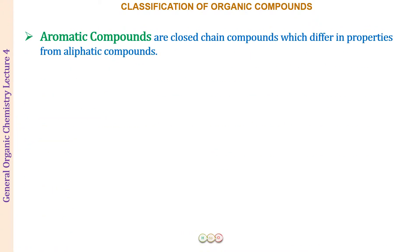Till now, we have classified organic compounds into acyclic compounds and cyclic compounds. For cyclic, we have studied the alicyclic. The other type of cyclic compounds are the aromatic compounds. These are closed chain or cyclic compounds, but they differ in properties from the aliphatic compounds. The aromatic compounds are different from aliphatic, whereas the alicyclic are similar in properties to the aliphatic compounds.